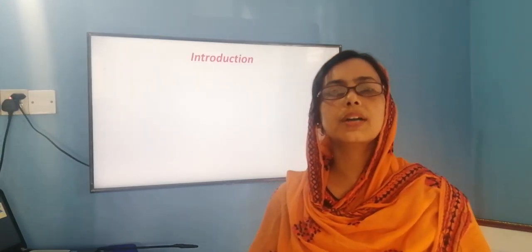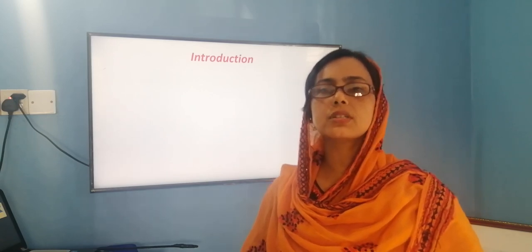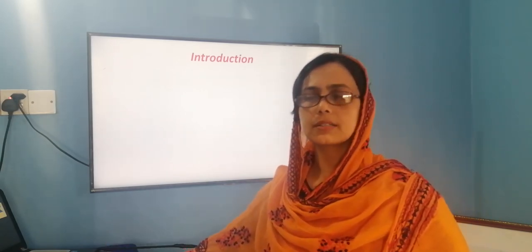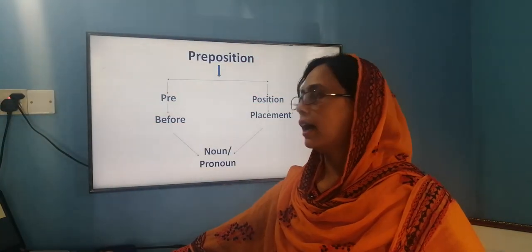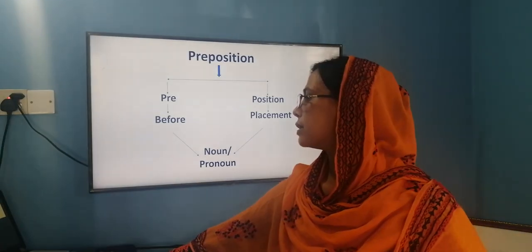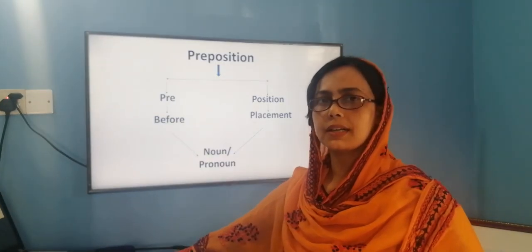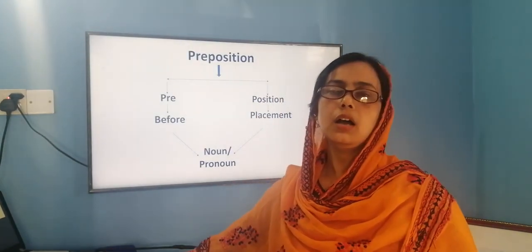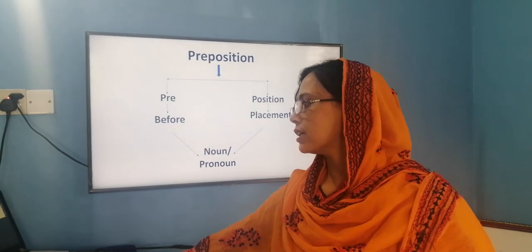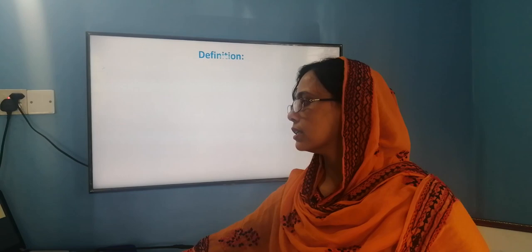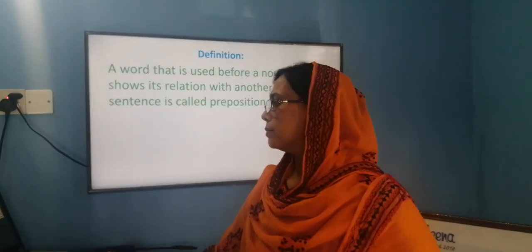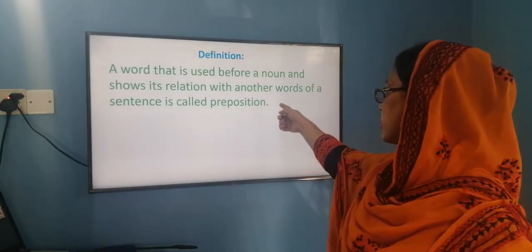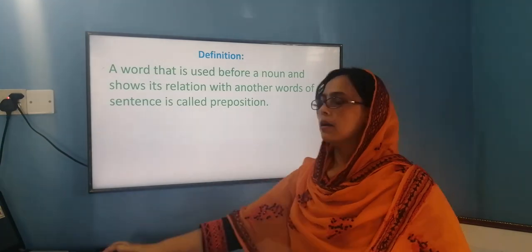First of all, let's know what a preposition is. The word 'preposition' is made of two words: 'pre' and 'position.' Pre means before, and position means placement. A word that is used before a noun or pronoun and shows its relation with another word in the sentence is called a preposition.